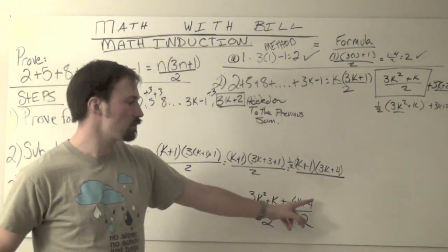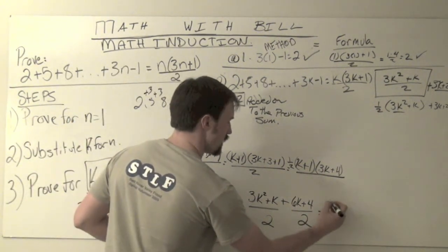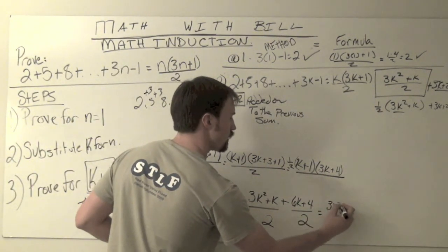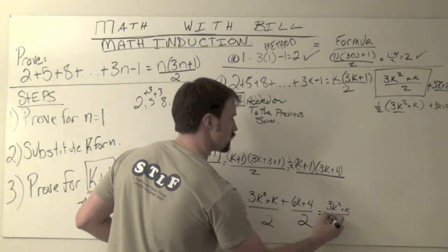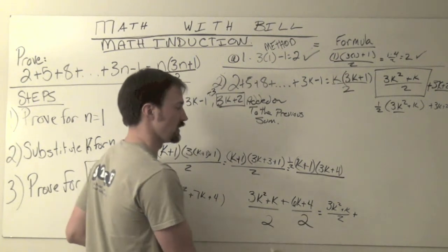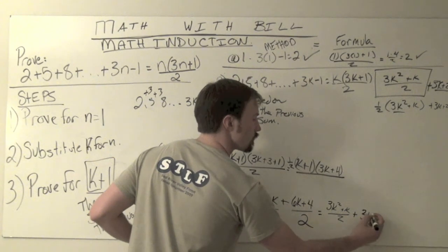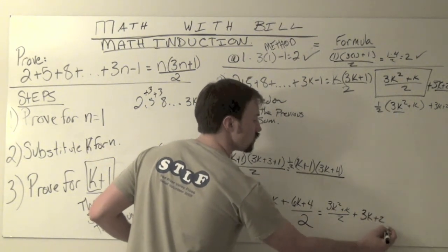we've got 6k plus 4 divided by 2, which all simplifies out to my 3k squared plus k divided by 2, plus both 6 and 4 can be divisible by 2, or they are divisible by 2,